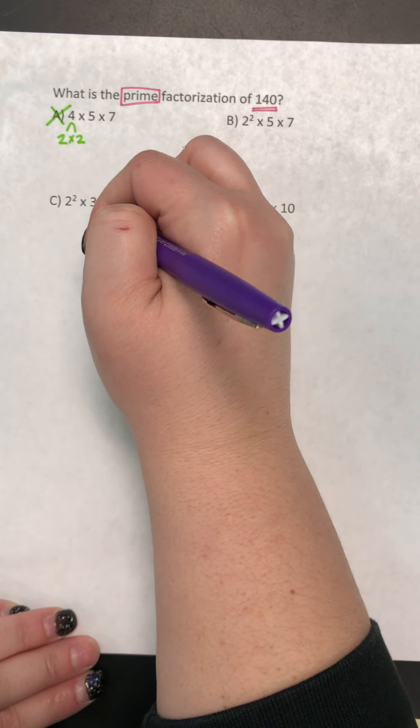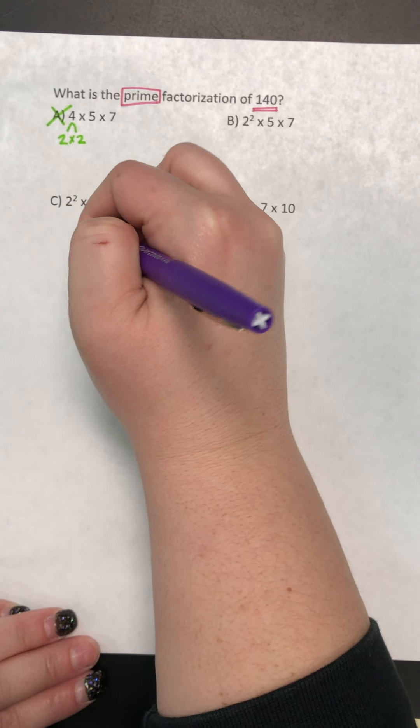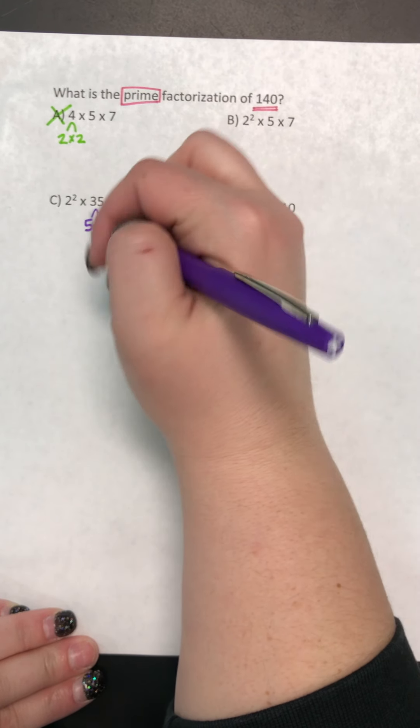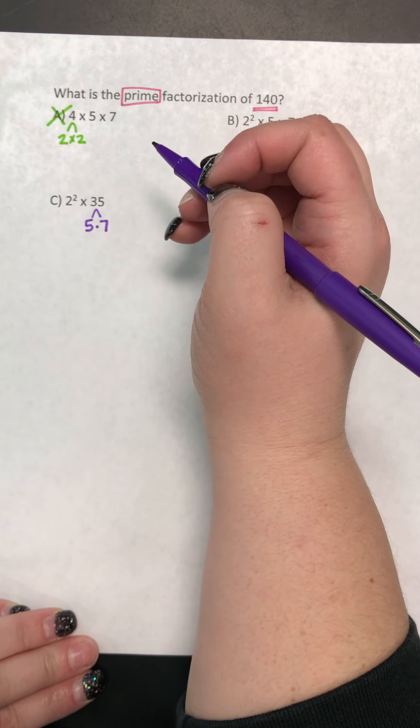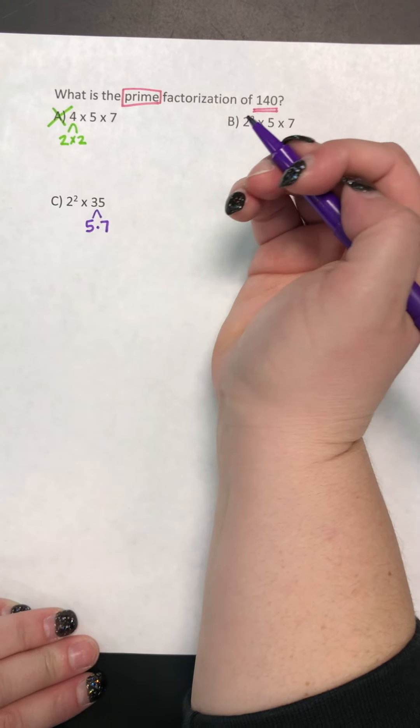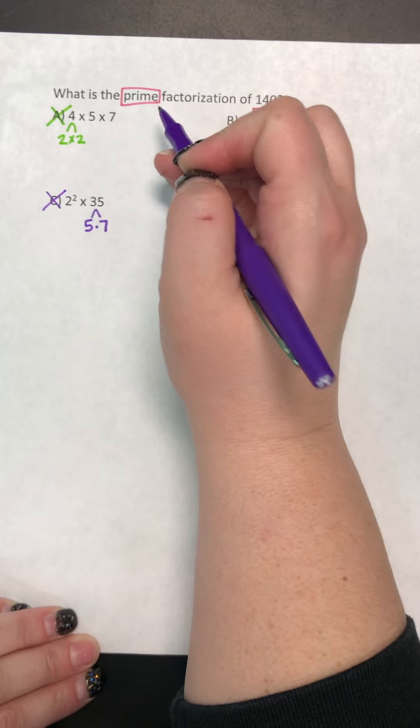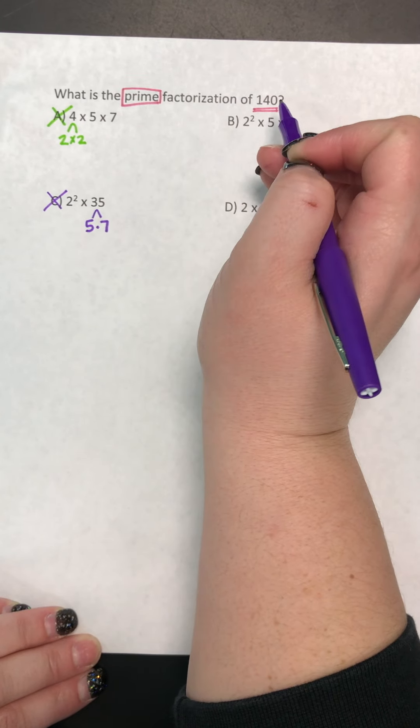Can I multiply to get 35? Yes. 5 times 7 is 35. So because that's an option other than 1 times 35, this is a composite number, and therefore C could not be a prime factorization of 140.